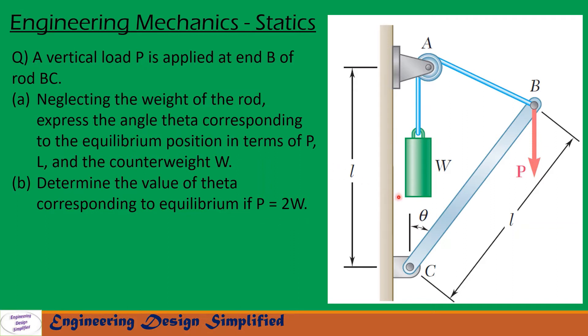In this problem, given is a weightless bar BC hinged at C, and at B there is a force P applied vertically downwards. So the length of the bar BC is L. The angle between vertical and bar is theta. At the end of the bar B there is a string and counterweight attached as shown here. So the distance between points C and A is L.